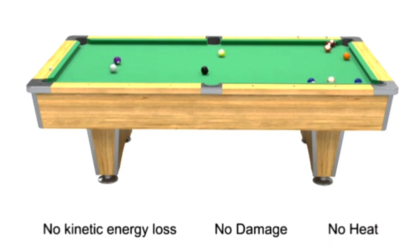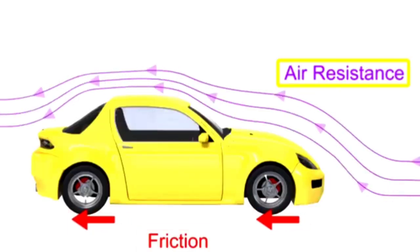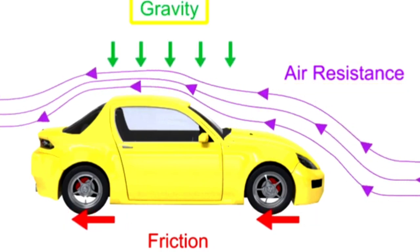In the real world, no collision is perfectly elastic because so many other forces come into play, like friction, air resistance, and gravity.